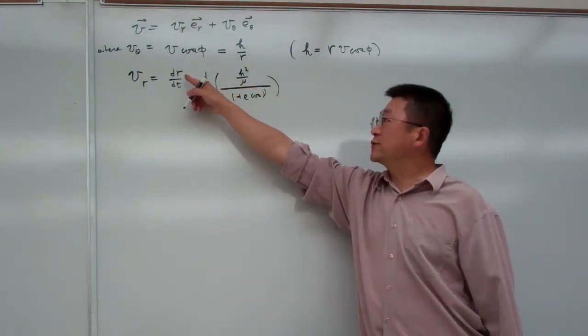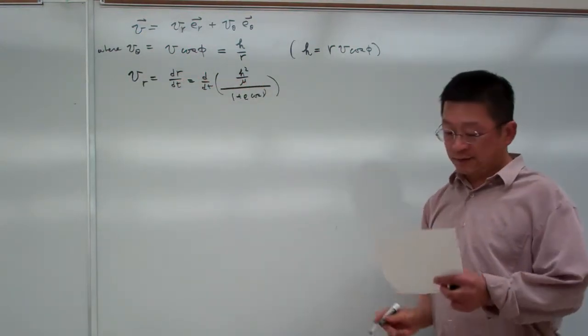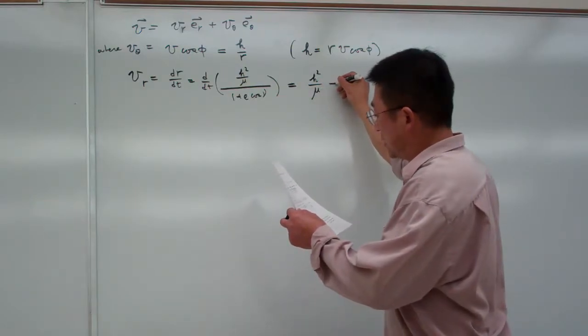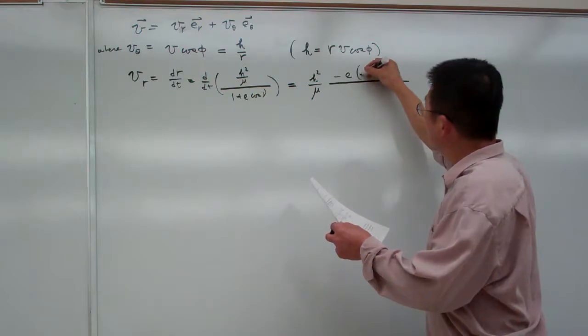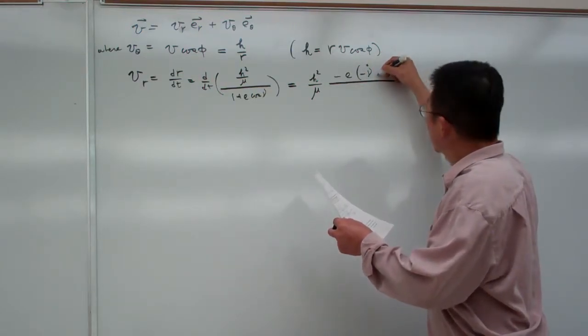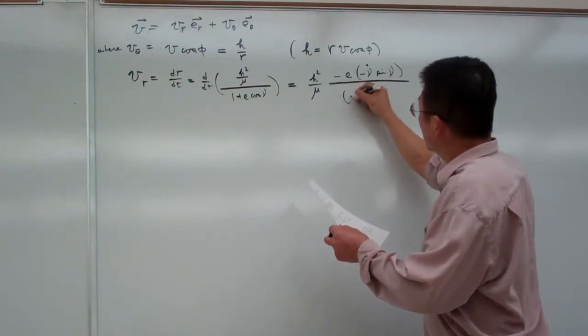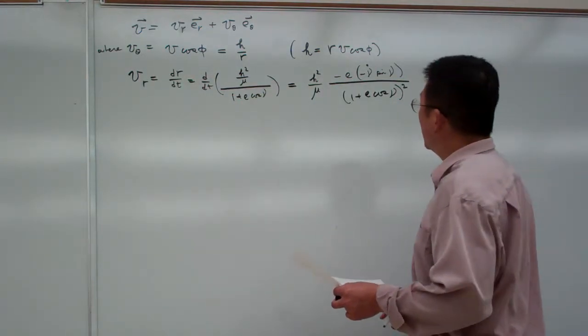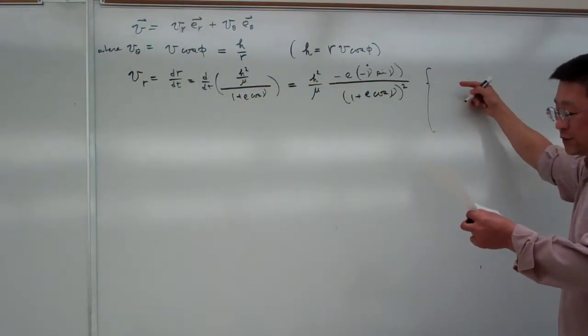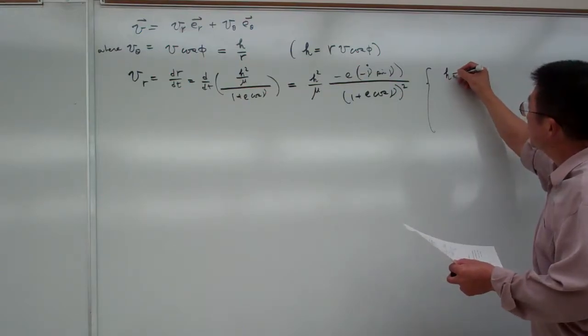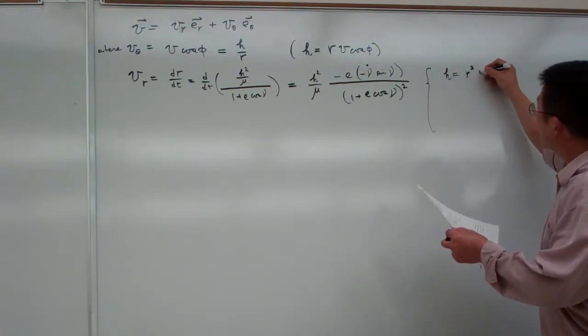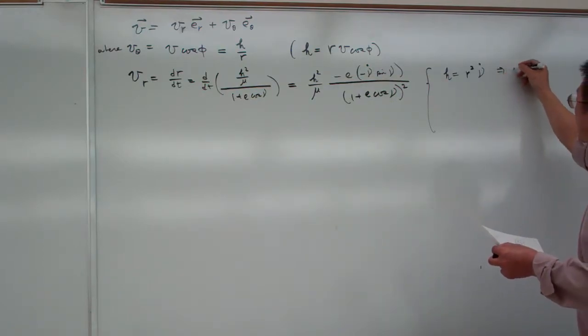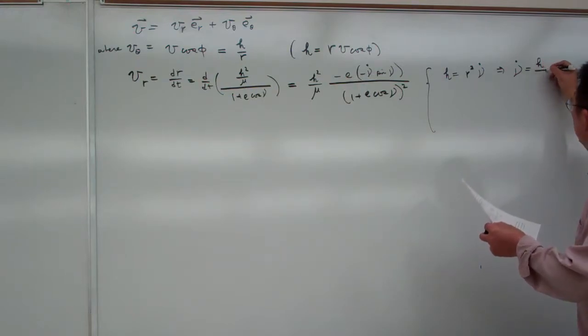So here I introduce the orbit equation for R and we plug in here. We do the rearrangement and we can quickly have this result, and that is minus E times H over mu times sine nu times nu dot. Here we want to simplify the whole thing using a little bit more information. We use the angular momentum equal to R squared times nu dot. Therefore nu dot can be described by H divided by R squared.